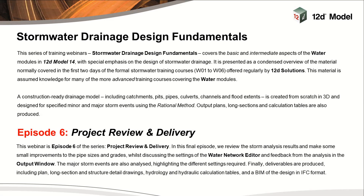Today's presentation, Stormwater Drainage Design Fundamentals Project Review and Delivery, is Episode 6 in this series, which covers the basic and intermediate aspects of the three waters modules in 12D Model 14, with special emphasis on the design of stormwater drainage. In this final episode, we'll review the storm analysis results and make some small improvements to the pipe sizes and grades, whilst discussing the settings of the Water Network Editor and feedback from the analysis in the output window. The major storm events are also analysed, highlighting the different settings required. Finally, deliverables are produced, including plan, long section and structure detailed drawings, hydrology and hydraulic calculation tables and a BIM of the design in IFC format.